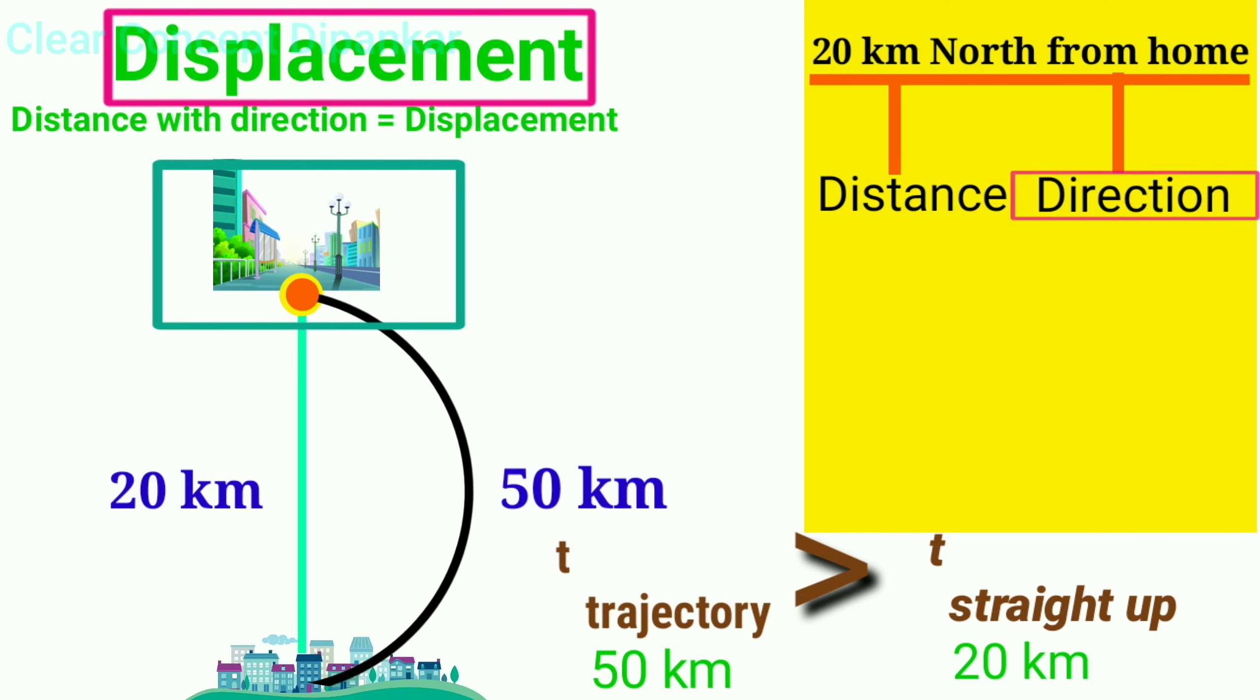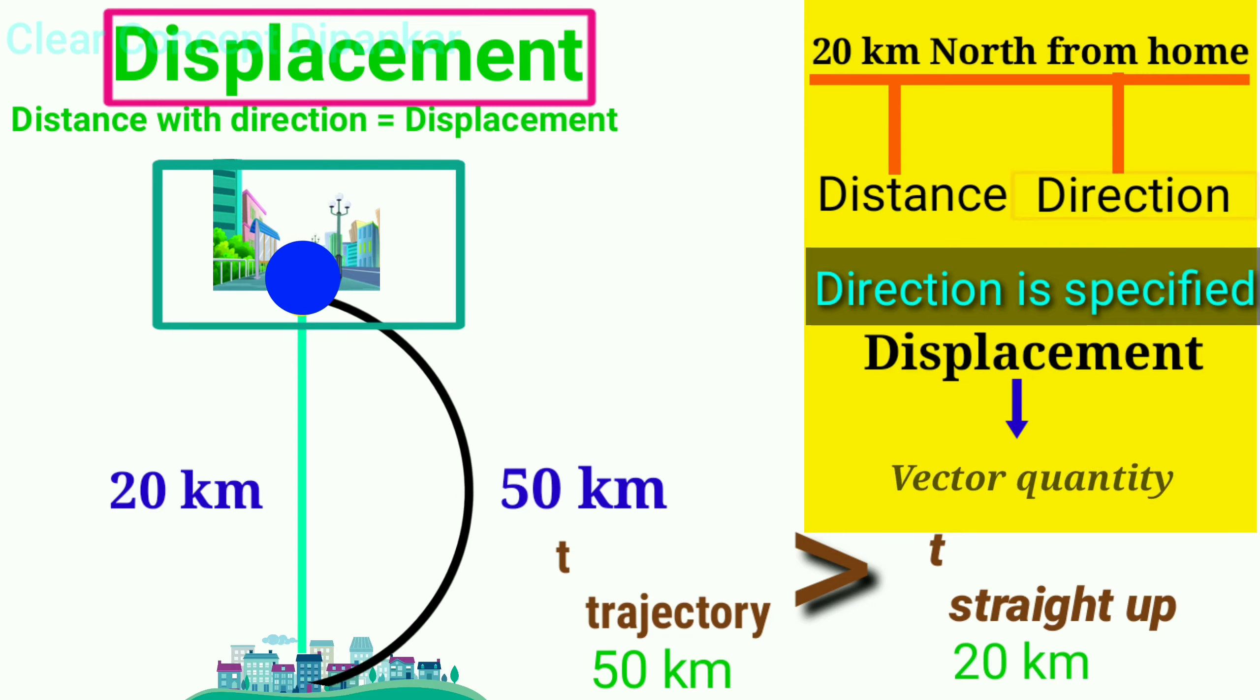North shows the direction and because the direction is specified, displacement becomes a vector quantity.